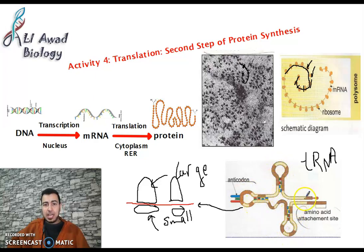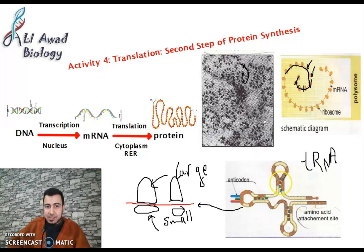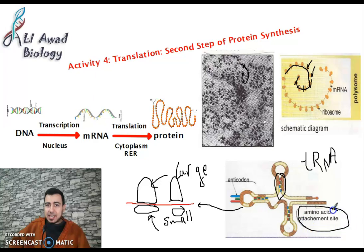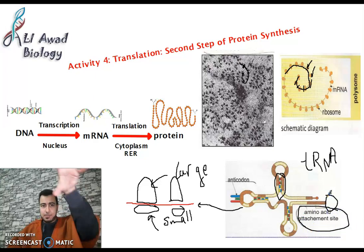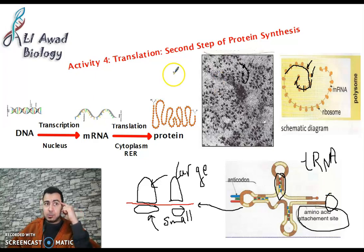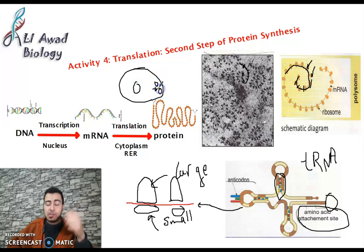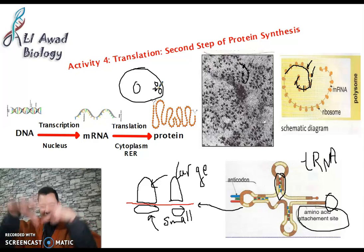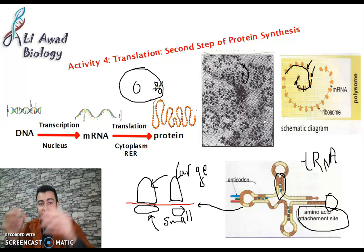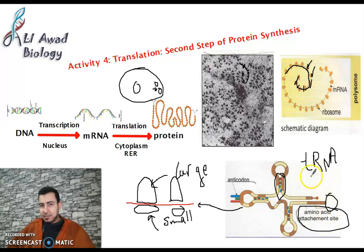The tRNA is folded onto itself, unlike mRNA. It is made up of nucleotides A, U, C, G. It has an important region called the amino acid attachment site, where it picks up an amino acid. The cell has a pool of amino acids, and the tRNA brings them to be assembled into a protein according to the mRNA sequence.